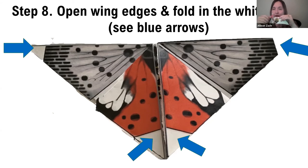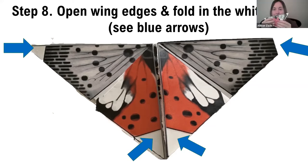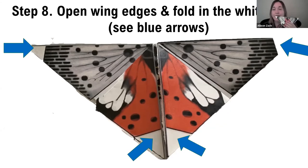Flip it over and that's your bug — your spotted lanternfly. Some of you may have a little space because of folding from before that wasn't done perfectly, and that's just fine. Most of us got that down. You just flip it back over and there's your spotted lanternfly.